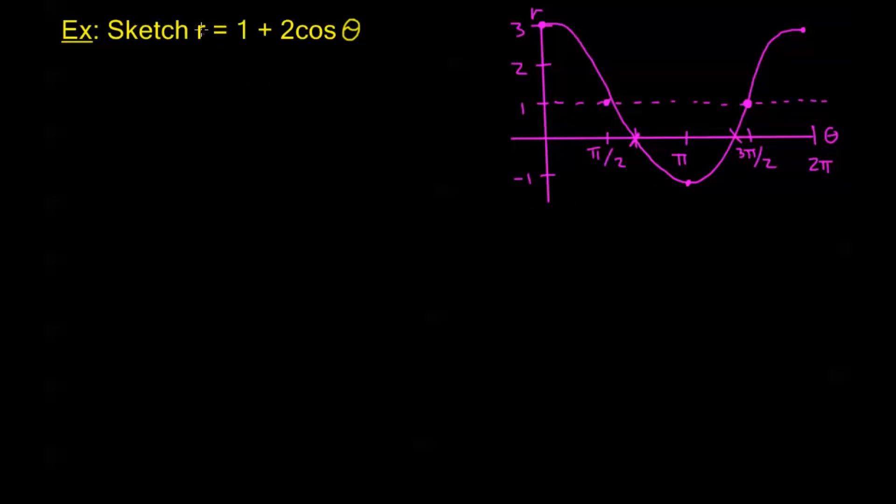And the way we do that is we're just going to write r as 0 in our equation that we have. So let's say r is 0. When r is 0 we're looking at 0 = 1 + 2cos(θ). So we need to solve for the θs between 0 and 2π that are going to give us this r = 0.